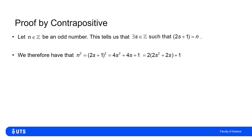Since the proof is about n squared, I square n: (2s + 1)² = 4s² + 4s + 1, which can be written as 2(2s² + 2s) + 1 — two times another integer plus one. So n squared is odd, because it's written in the form 2(integer) + 1.